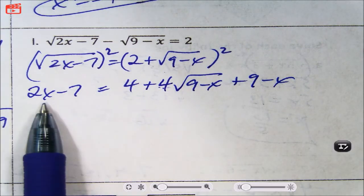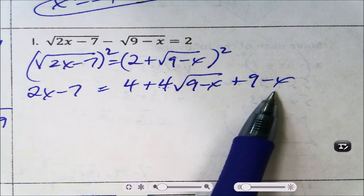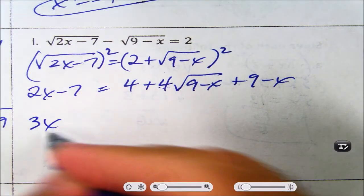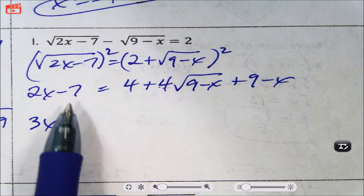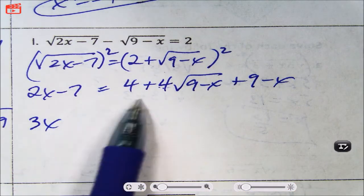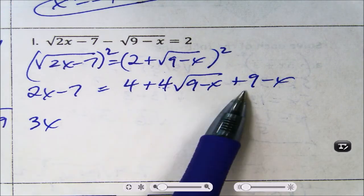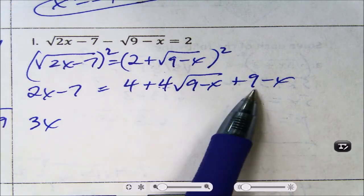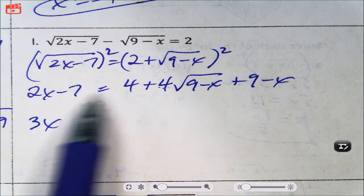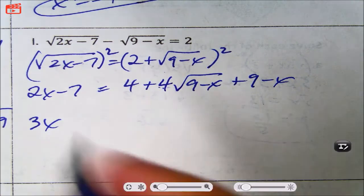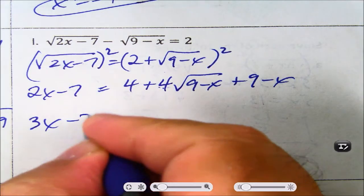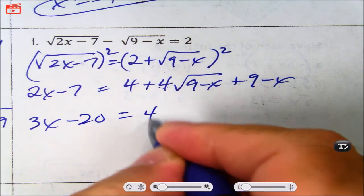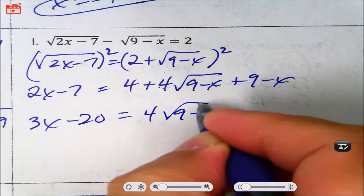I have 2x and a minus x over here — I move it to the left, giving 3x. I have negative 7, and I have 4 and 9, so add 4 and 9 to get 13. Subtract 13 from negative 7, that's negative 20. So we have 3x minus 20 equals 4 root 9 minus x.